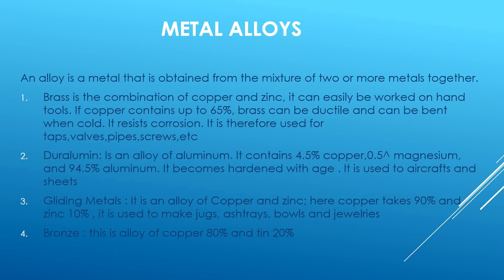Metal alloys: a metal alloy is a metal obtained from the mixture of two or more metals together. Brass is a combination of copper and zinc; it can be easily worked with tools. If the copper content is up to 65 percent, brass can be ductile and bent when cold. It resists corrosion and is therefore used for taps, valves, pipes and screws.